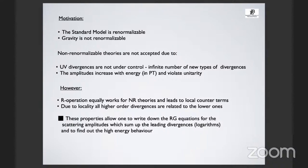If you'd like to do something with gravity, there are many approaches, but maybe one of them is just to know how to work with non-renormalisable theories. Usually these theories are not accepted in particle physics for two reasons. The first reason is that there are ultraviolet divergences not under control—you need an infinite number of degrees of freedom to fix all the arbitrariness. The second problem is that the amplitudes in these theories increase with energy, because the coupling is usually dimensionful with negative dimension, so to compensate it we have energy, and the amplitudes grow and violate unitarity.